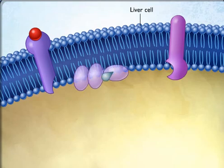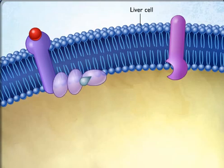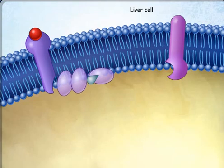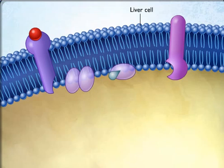When epinephrine binds to beta-adrenergic receptors on the liver cell, G proteins on the inner side of the cell membrane are activated. Each G protein is composed of three subunits, and the binding of epinephrine to its receptor protein causes one of the G protein subunits to dissociate from the other two. The G protein subunit which dissociates carries a GDP, which is replaced by GTP when the subunit is activated.